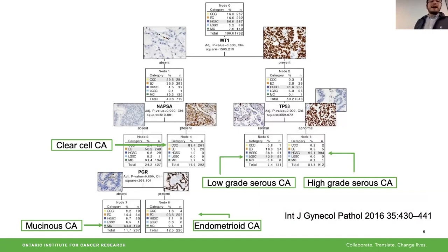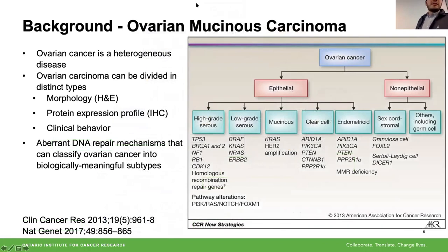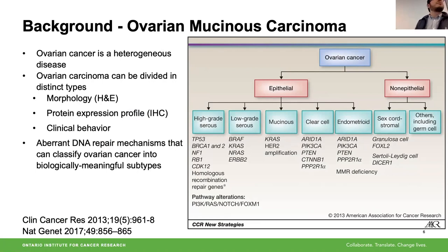Serous carcinomas have positive markers of serous differentiation like WT1 and TP53 abnormalities. We have markers of clear cell morphology, and progesterone receptor expression for endometrioid tumors. But there is really nothing that can help us distinguish mucinous carcinomas from their mimickers at the molecular expression profile level.